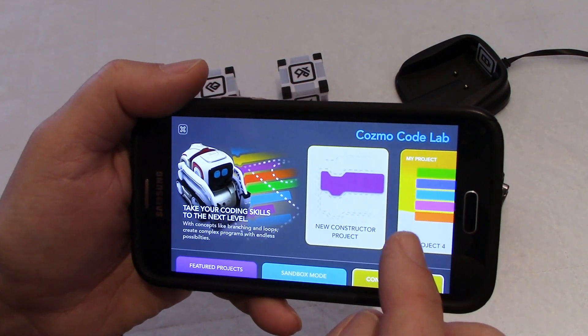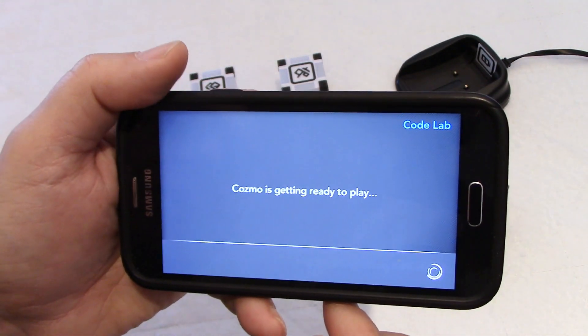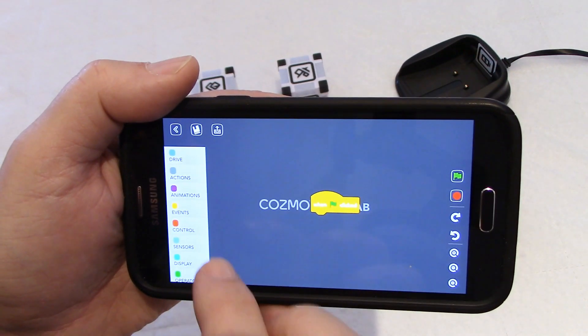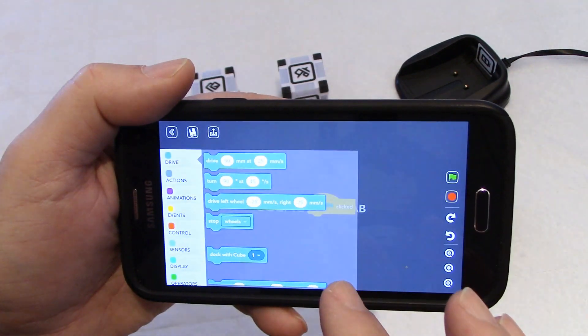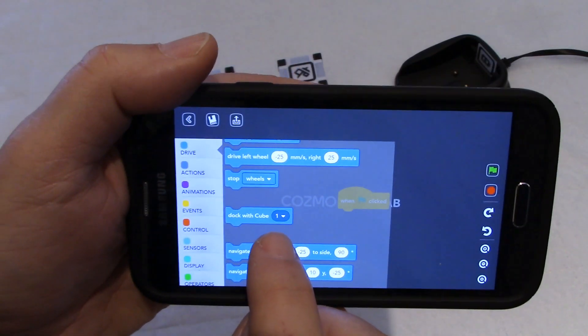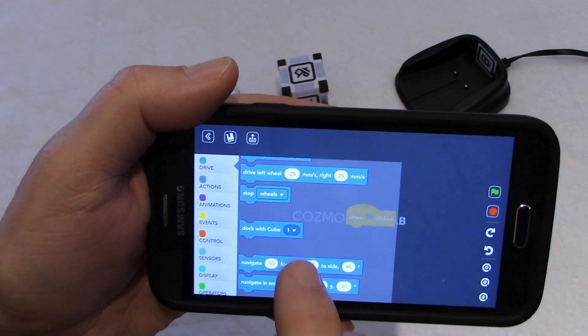So in CodeLab, for example, let's have a look here at a new project and all I want to show you here is a couple of examples on the side. If you look at Drive, and here for example Dock with Cube number 1, you can select here 1, 2 or 3. That's one example.